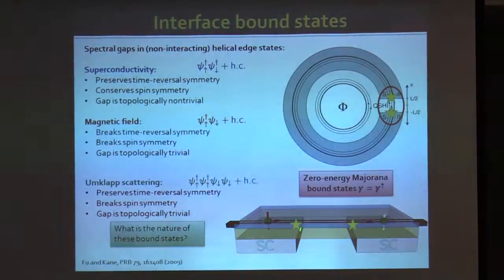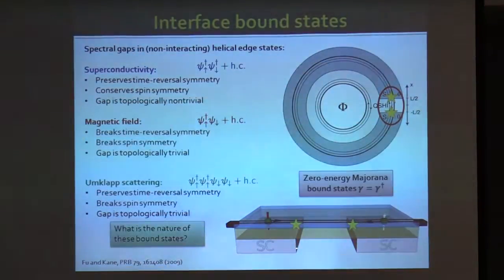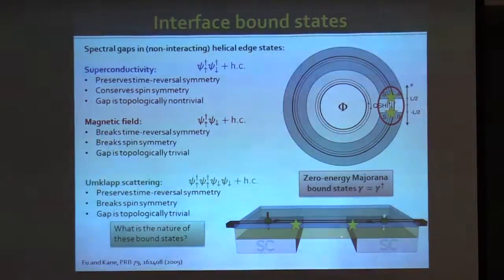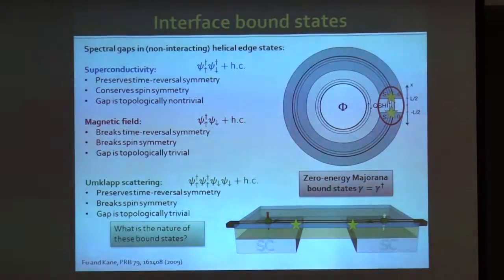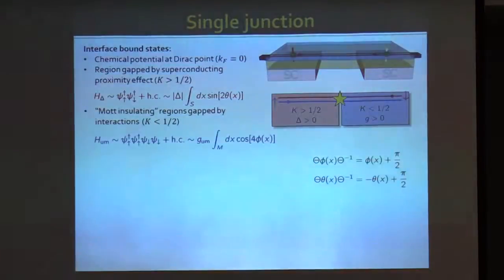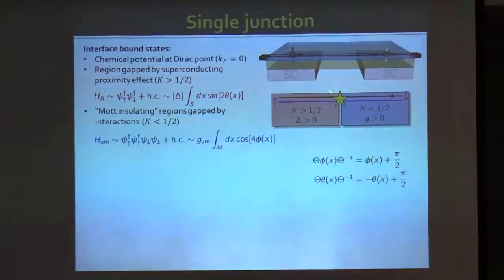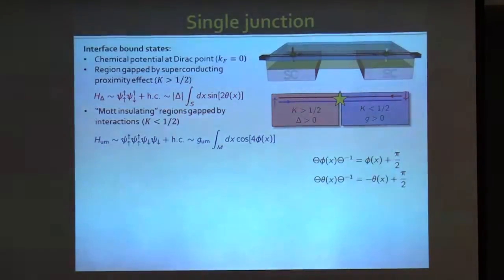There are two key experimental signatures. First, an 8-pi periodic Josephson effect, which follows directly from the fact that the bound states carry e/2 charges. Second, these states fulfill non-abelian braiding statistics. Let me discuss braiding. In a two-dimensional P+iP wave superconductor, vortices can be brought around each other — as was discussed in Anton's talk — to go from one ground state to another. This is the essence of braiding.